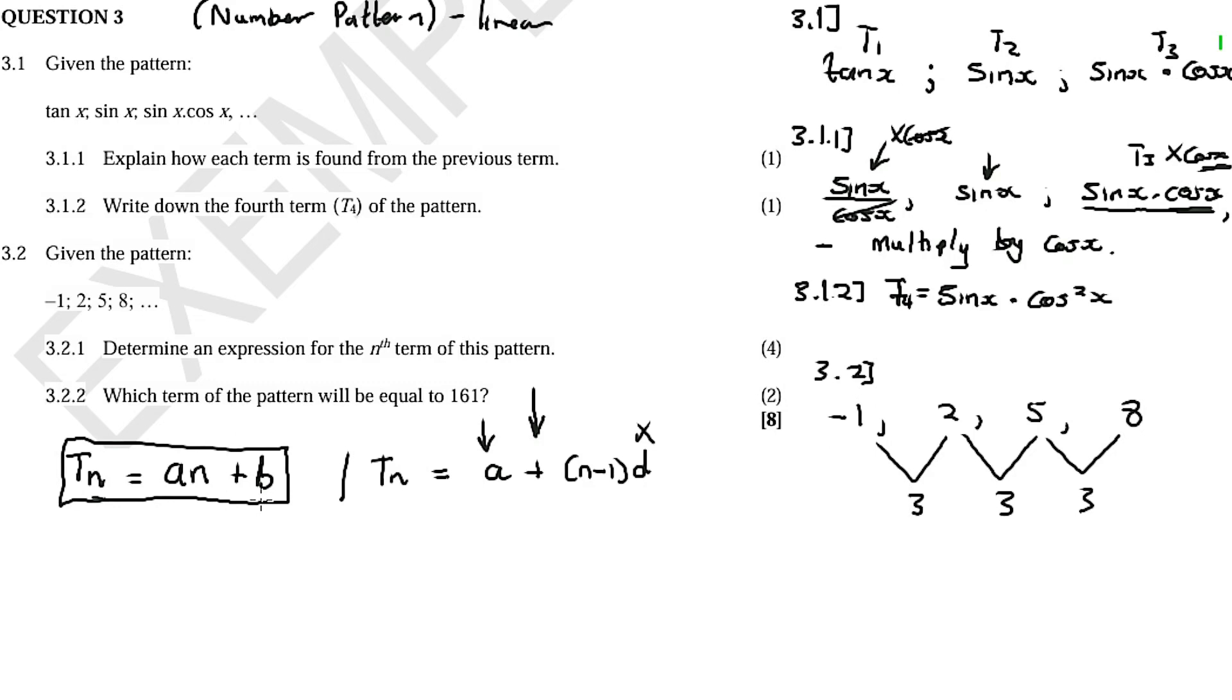Tn is equal to a plus (n-1) times d. Substitute a is -1 plus (n-1), and d is 3, the common difference. Simplifying: -1 plus 3n minus 3, so Tn equals 3n minus 4. This is the nth term for this pattern, a linear or arithmetic pattern.